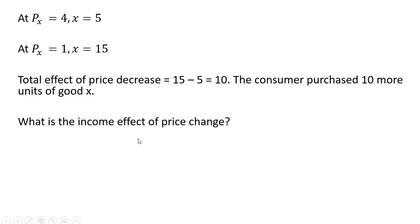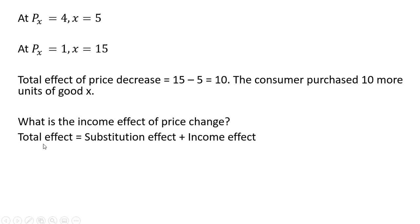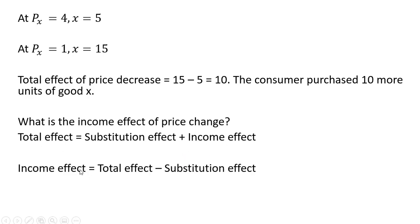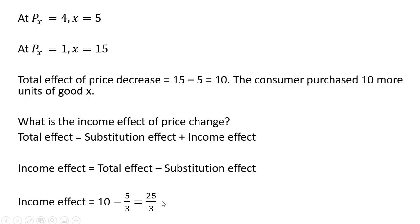What is the income effect of the price decrease? The total effect equals the substitution effect plus the income effect, so the income effect equals the total effect minus the substitution effect. The total effect is 10 and the substitution effect is 5/3, so the income effect is 10 minus 5/3, which equals 25/3. That's it — hope you found this video helpful.